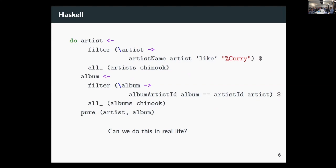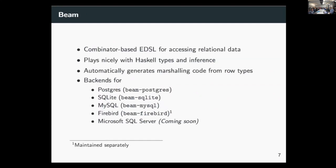So just to give an overview of Beam, it's a combinator-based, embedded DSL for relational data. One of the things I really want to do is to have it play nicely with Haskell types, and type inference, which is really important for me. I want to be able to automatically generate marshaling code from row types. And finally, I want to be able to have it work with multiple backends. We support Postgres, MySQL. Firebird is obtained separately, and I'm working on a SQL Server backend as well.